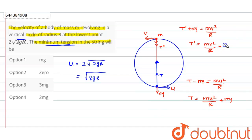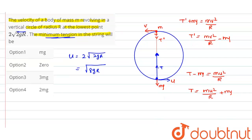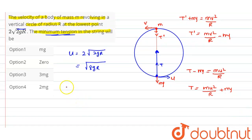At the topmost part, the tension term is less because a minus term is applied in front of mv²/r. So the tension is minimum at the topmost point. Now we need to find the velocity v at the top. We apply the work-energy theorem: work done by all forces equals change in kinetic energy, i.e., K_final − K_initial.